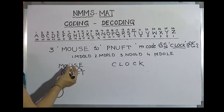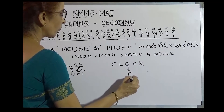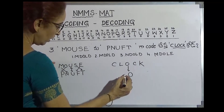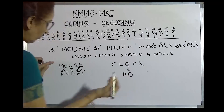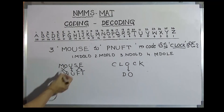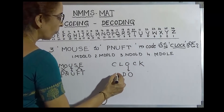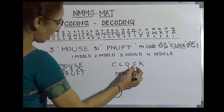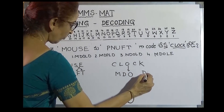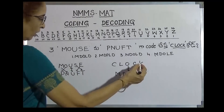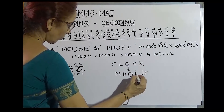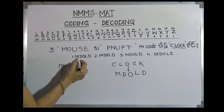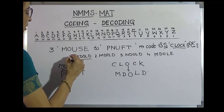This is the center letter. Here we add N, then we add D. There is D. Then we add P. This is P, this is L, this is M, this is S, this is T, this is C, here it is D, this is E, this is F, this is D, this is K. The answer is L. Clock is M-D-O-L-D. The answer is M-D-O-L-D. First one is M-D-O-L-D — this answer is correct.